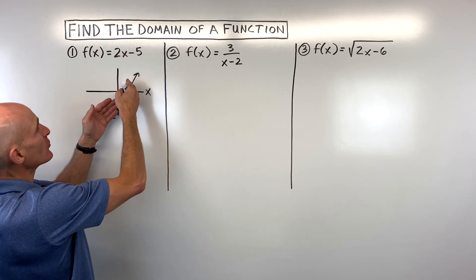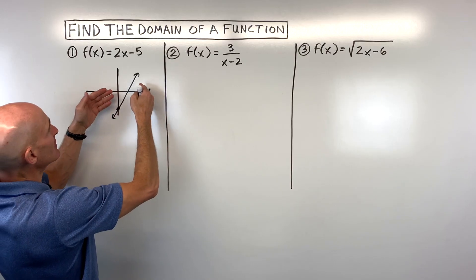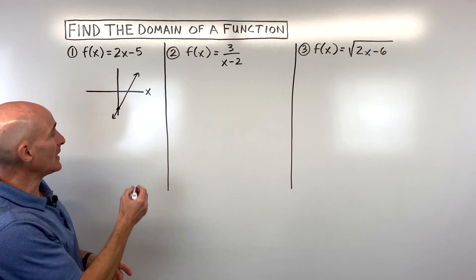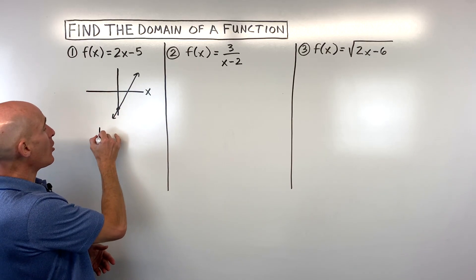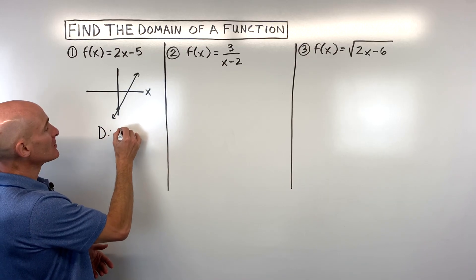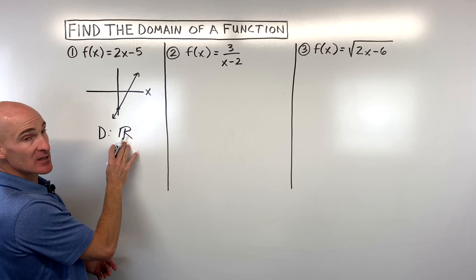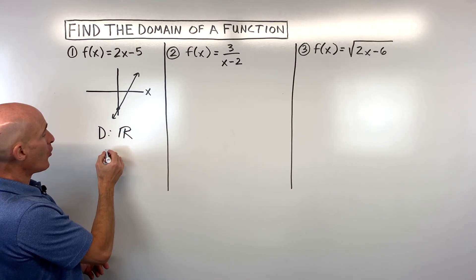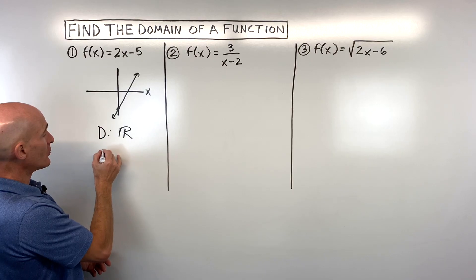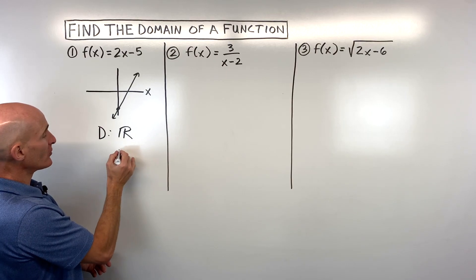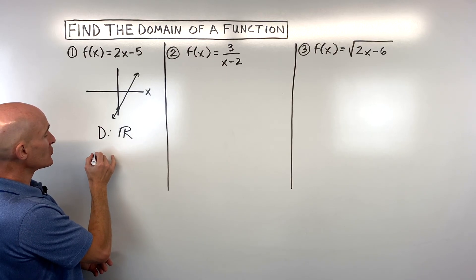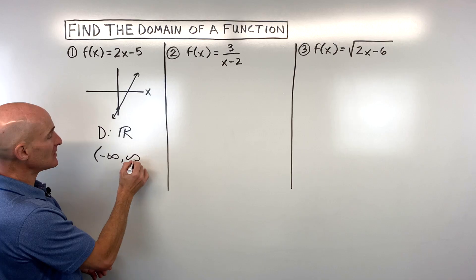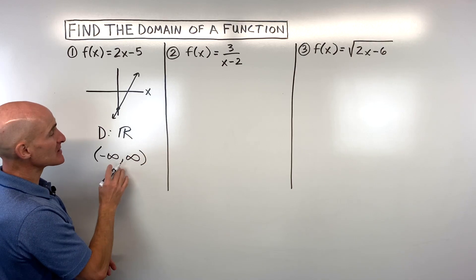This graph goes to the left and to the right forever and ever, so we would say the domain is all real numbers. You can use the special letter for all real numbers, or you could write it out as all real numbers. Or if you're using interval notation, you could say from negative infinity to positive infinity.